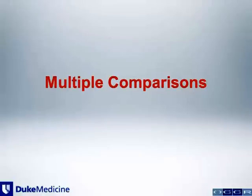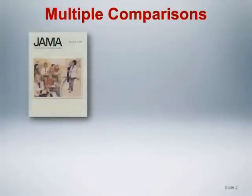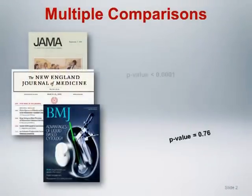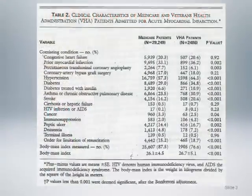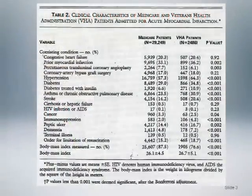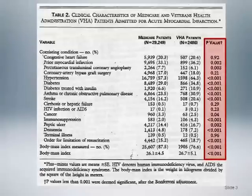Now that we have introduced both p-values and hypothesis tests, we need to spend a little time grappling with the problem of multiple comparisons. As you browse the pages of today's top medical journals, you will undoubtedly encounter multiple p-values and tests of hypotheses in virtually any original research article. Tables like the one shown here from an NEJM article are not at all uncommon. There are actually 19 p-values in the highlighted column and multiple tables similar to this one throughout the article.